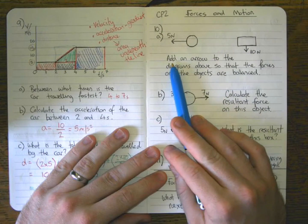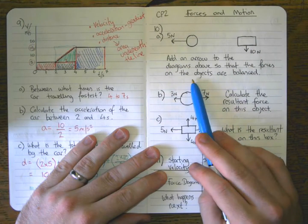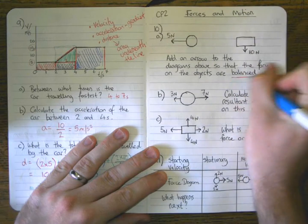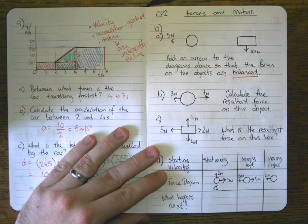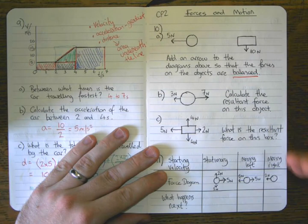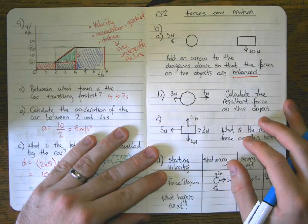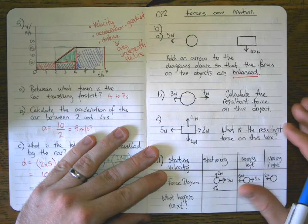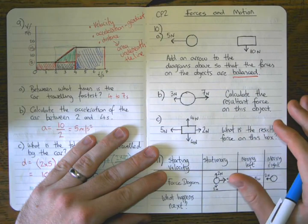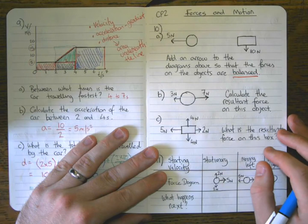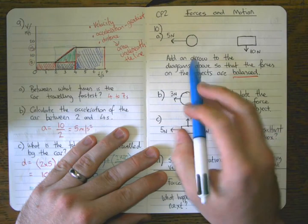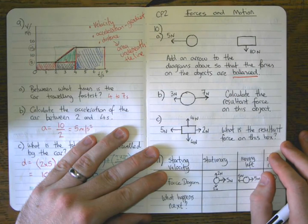The first question says: add an arrow to the diagrams so that the forces on the objects are balanced. Balanced forces are where the sum, or the addition, of more than one force gives a total force of zero. To make this happen, the forces need to be in opposite directions and the same size. Have a go at these first two diagrams.